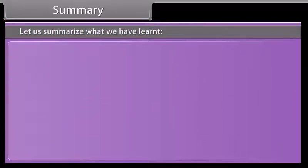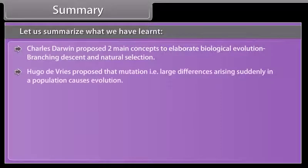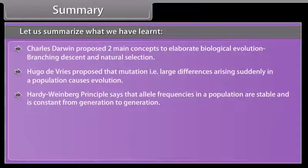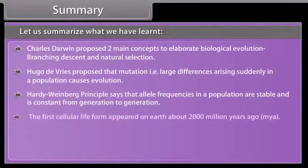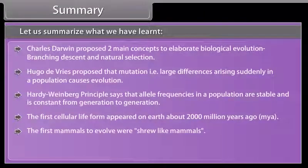Let us summarize what we have learned. Charles Darwin proposed two main concepts of biological evolution: branching descent and natural selection. Hugo de Vries proposed that mutation — large differences arising suddenly in a population — causes evolution. Hardy-Weinberg principle says that allele frequencies in a population are stable and constant from generation to generation. The first cellular life form appeared on earth about 2,000 million years ago. The first mammals to evolve were shrew-like mammals. Homo sapiens evolved around 75,000 to 10,000 years ago.